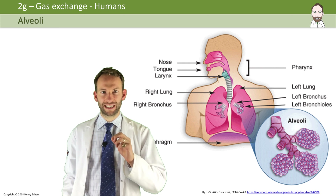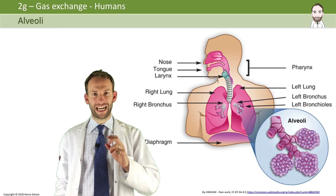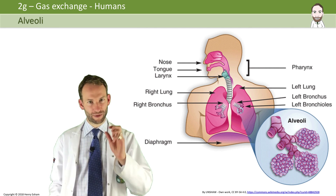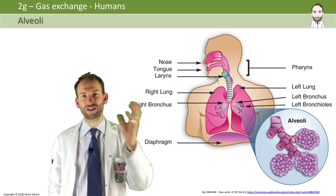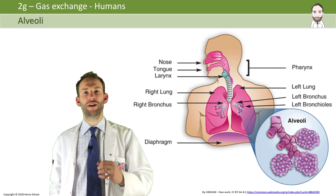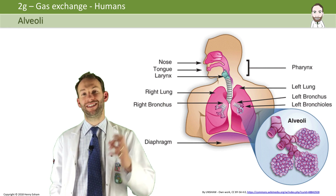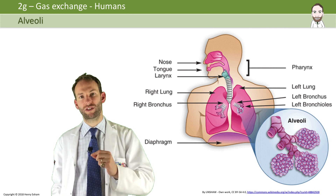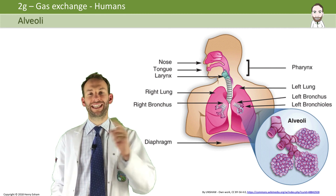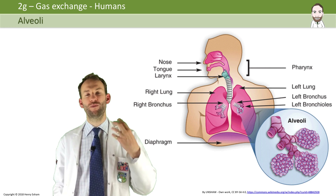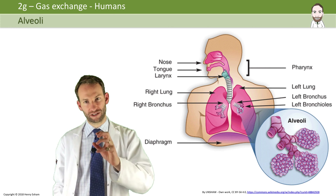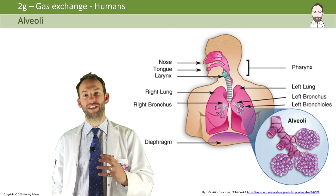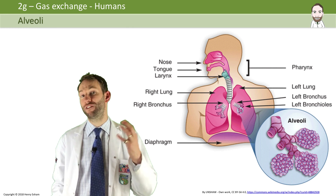Now let's look into more detail about the alveoli. There are about 700 million of these tiny microscopic air sacs inside your lungs, and they are surrounded by an incredible network of blood capillaries. This is where gas exchange actually happens — this is where the gases swap. It doesn't happen in the bronchi and the bronchioles; it only happens at those tiny little alveoli, and it depends on concentration gradients because it's done by diffusion.